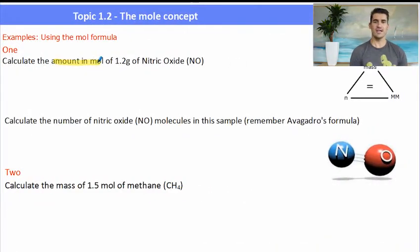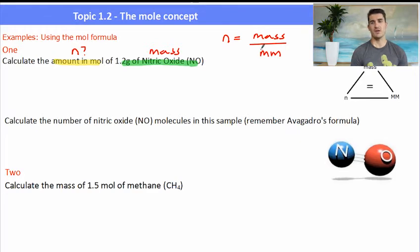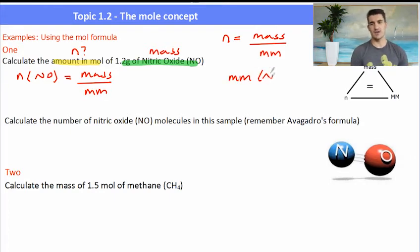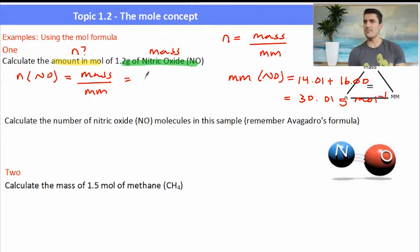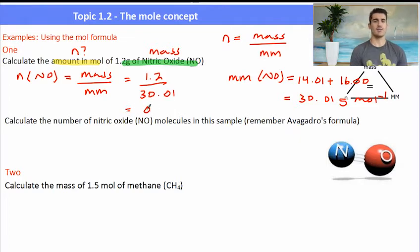So we're going to use the mole formula. Calculate the amount in mole of 1.2 grams of nitric acid. Remember the formula, number of moles equals mass over molar mass. So calculate the amount in mole, that's asking us to find n, and we've been given a mass. The molar mass is something we're able to find using the periodic table. So starting off our working out, we have the number of moles of NO equals mass over molar mass. I need to find the molar mass, so I can do that using the periodic table. Mass of nitrogen plus mass of oxygen. Doing a little side calculation will give me 30.01 grams per mole as the molar mass. Now I can go back to my formula. My mass was 1.2 grams, my molar mass which I just worked out is 30.01. Subbing those numbers in, I can get the number of moles. Two significant figures because our mass was two significant figures.